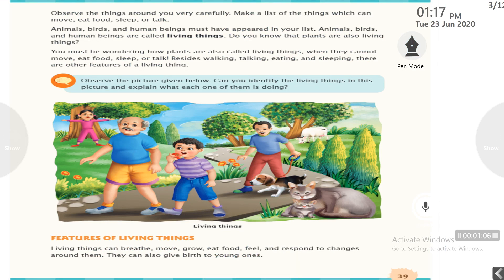Observe the things around you very carefully. Make a list of the things which can move, eat food, sleep or talk. Animals, birds and human beings must have appeared in your list. Animals, birds and human beings are called living things. Plants are also living things.